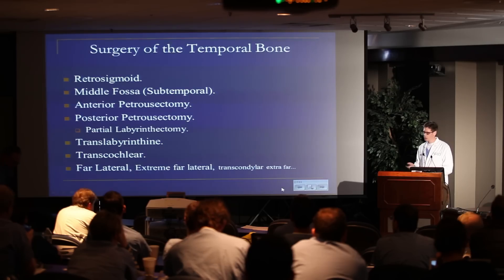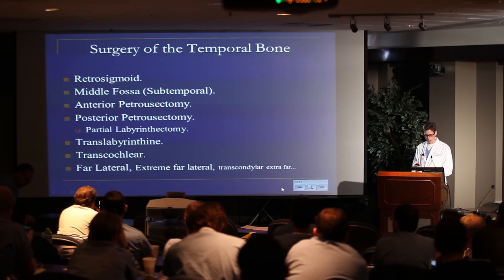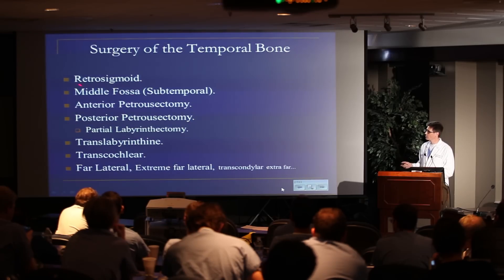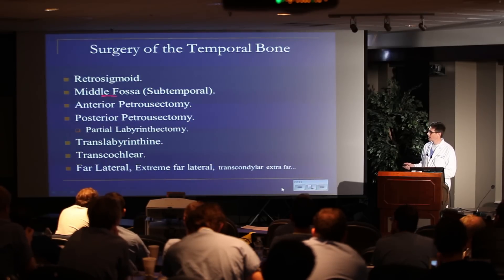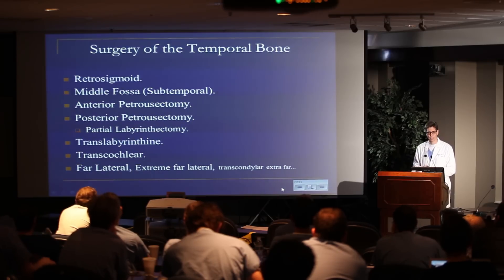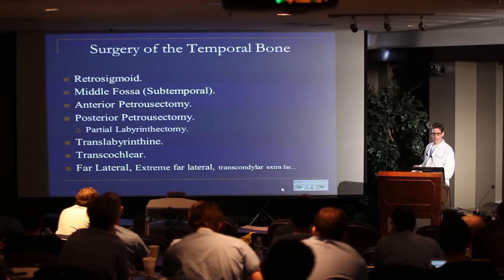There are lots of ways to operate in the temporal bone. Earlier this morning we did a middle fossa anterior petrosectomy. What we're going to move to now is posterior petrosectomy. You can certainly add a partial labyrinthectomy — some people talk about taking off the posterior semicircular canal to give you a little more room. Many say you can do that pretty liberally, then just pack it with bone wax and still save hearing.